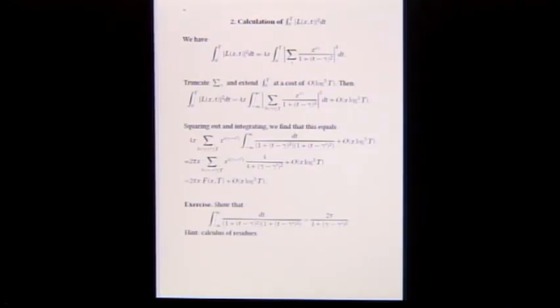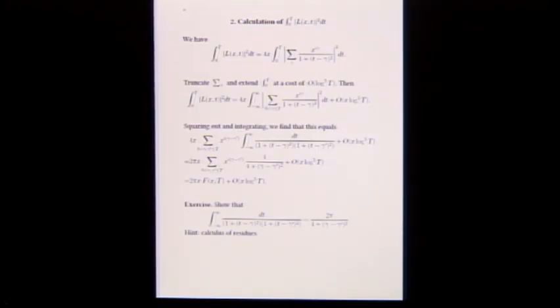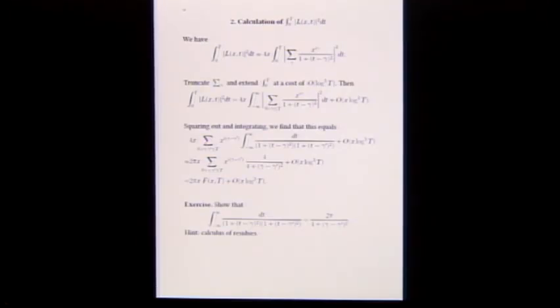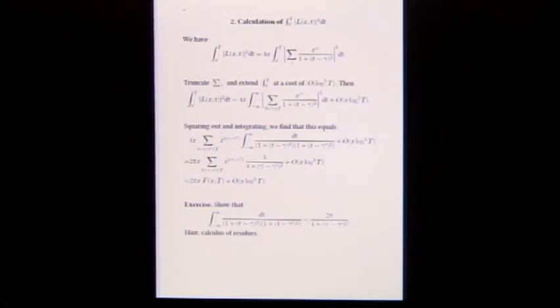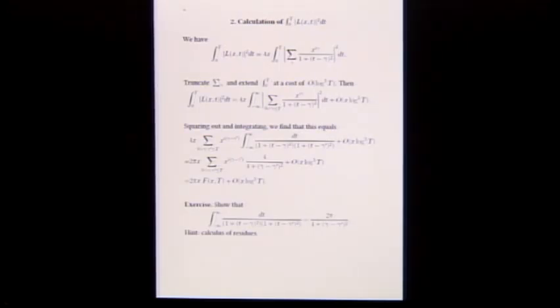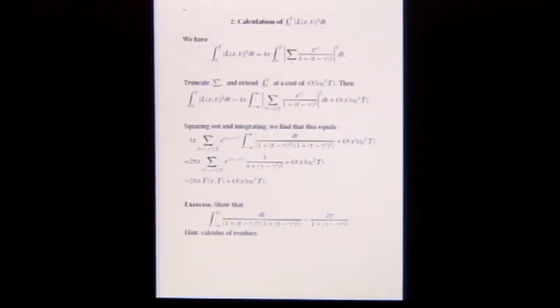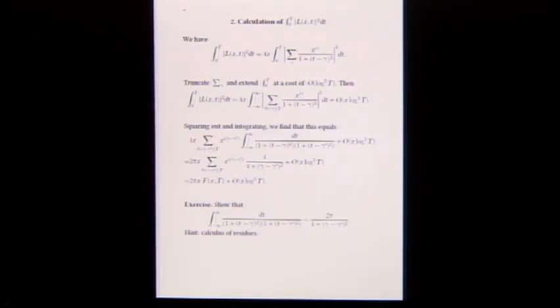Square out and integrate. This is straightforward — the integral is a basic residue calculus problem. You get the weight 4 over (4 plus (gamma minus gamma prime) squared) that we had. So calling this sum 2 pi x times f(x,T), where f(x,T) is the double sum over ordinates of this factor, plus an error term.